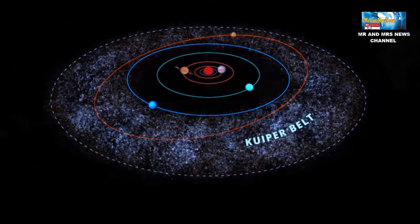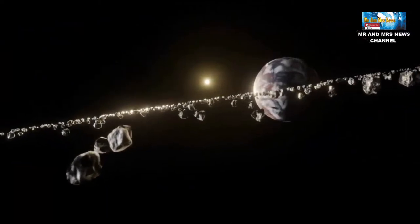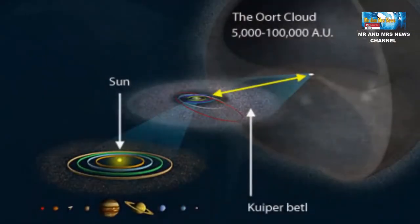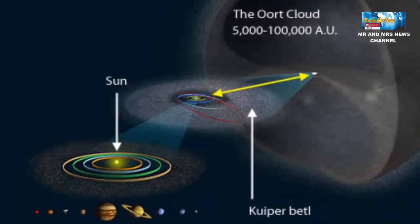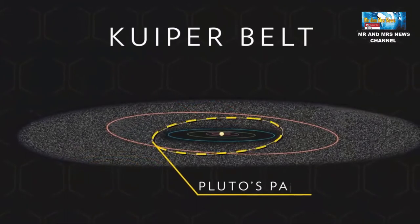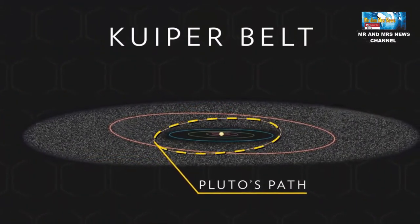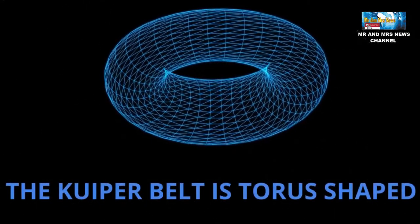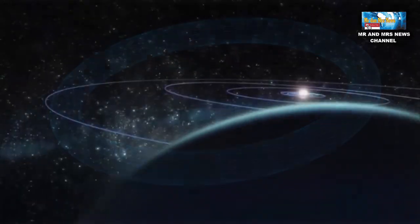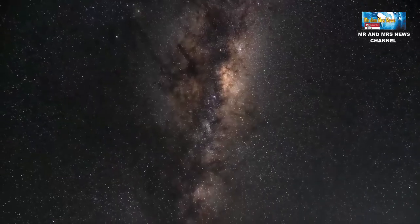Wilayah ini disebut sebagai Sabuk Kuiper atau Kuiper Belt. Sabuk Kuiper merupakan wilayah yang berada di luar orbit planet Neptunus. Artinya, Sabuk Kuiper berada di bagian terjauh di tata surya. Sabuk Kuiper juga berbentuk lingkaran mirip donat yang tebal dan berisi benda-benda yang membeku seperti es.